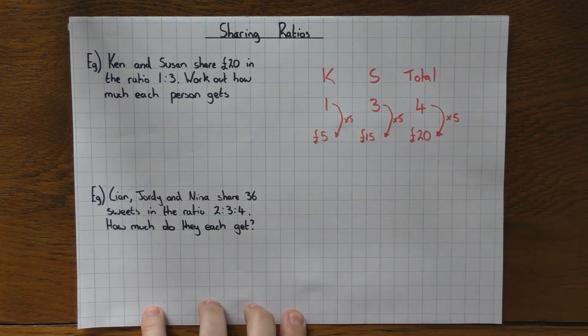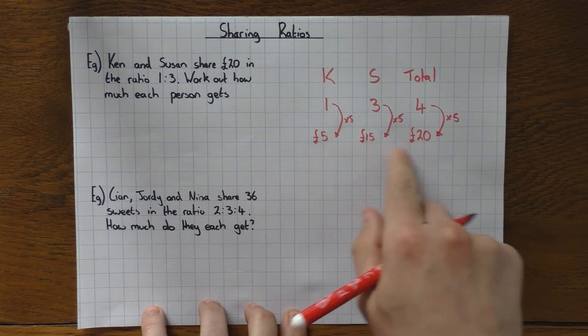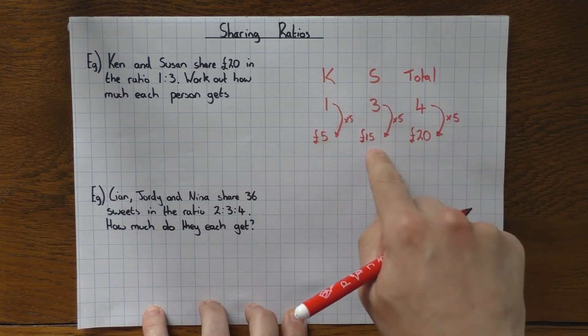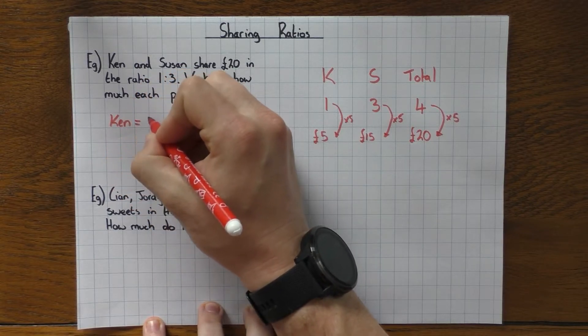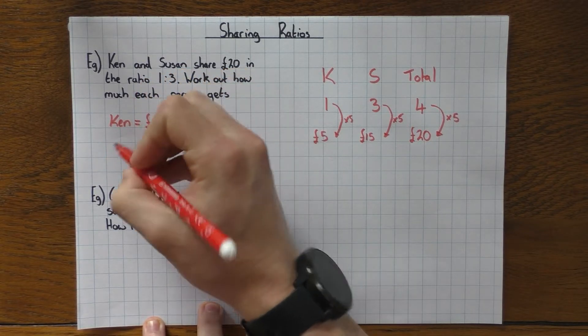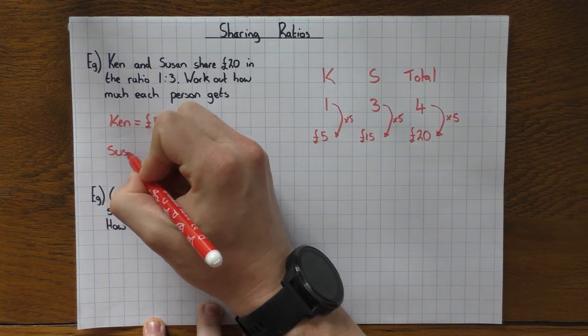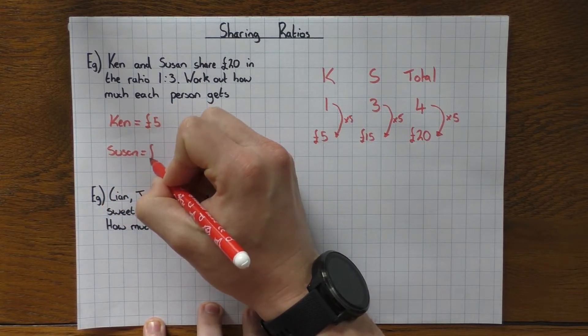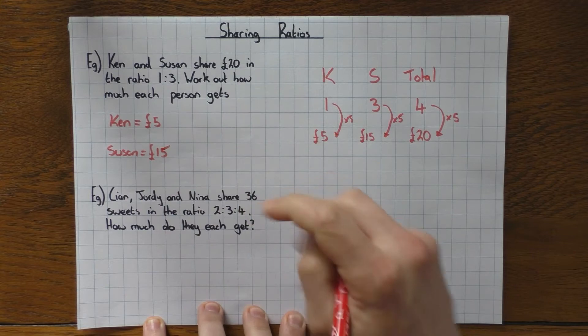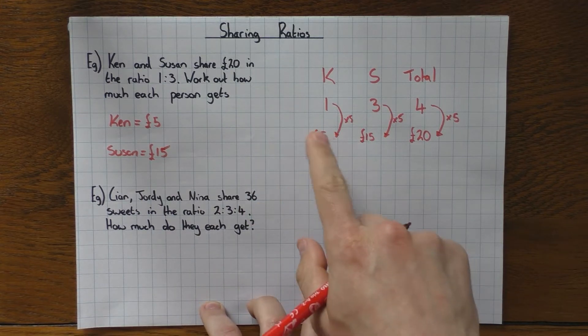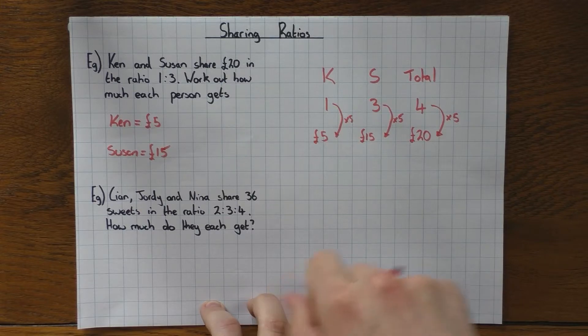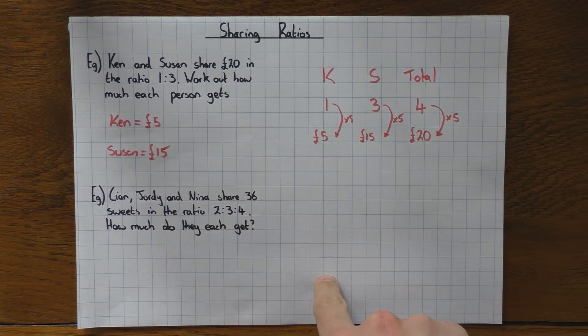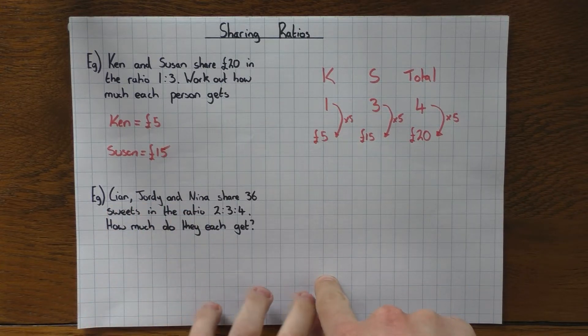Just make sure your answer's really nice and clear. I know it may look like it's nice and clear in here—Ken gets 5, Susan gets 15—but in the exam it's always worth just making it really clear, saying Ken gets £5 and Susan gets £15. And of course you can check it: 5 plus 15 is 20, so happy days, it works.